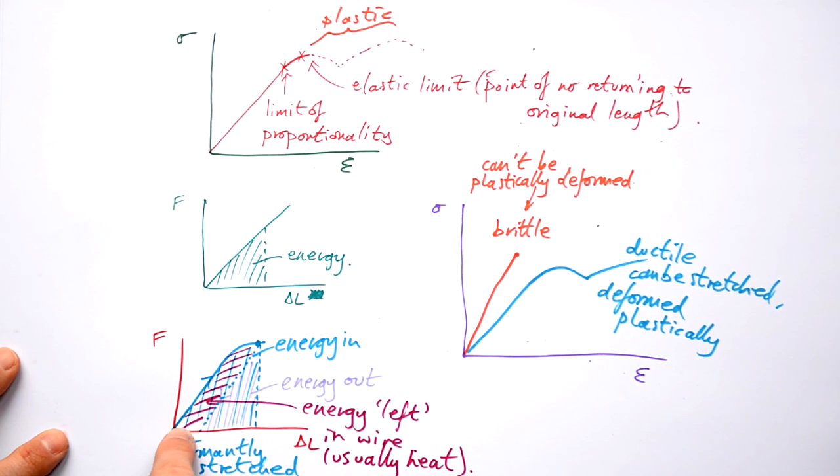Now these curves can be all kinds of shapes. They don't have to be straight going up, they can be curved going up and curved coming back down. But it's important that you understand that the area between the loading curve and the unloading curve, that's going to be the energy lost.